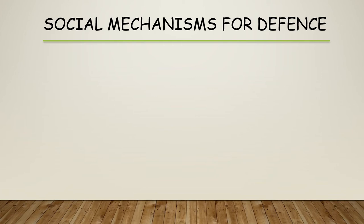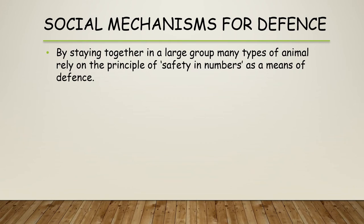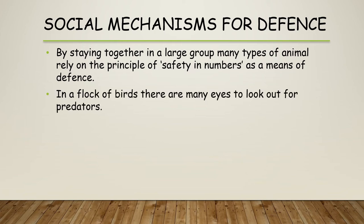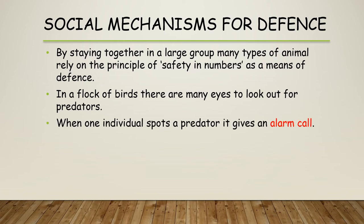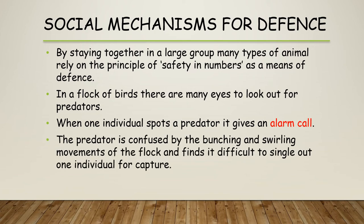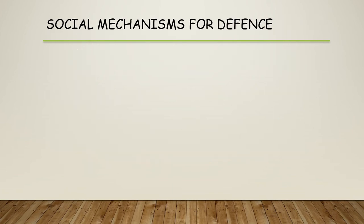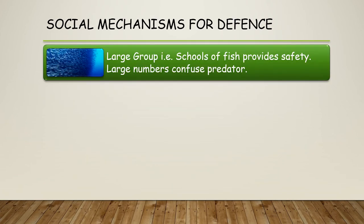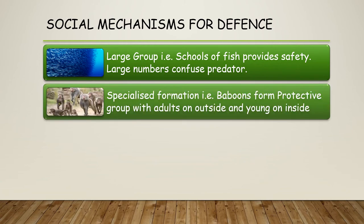Now looking at social mechanisms for defence, animals rely on the idea of safety in numbers, which we're familiar with as humans too. In a flock of birds there are many eyes to look out for predators, and when one individual spots a predator it can give an alarm call. They also use confusion through bunching and swirling movements, making it difficult for a predator to pick out an individual. The same applies to schools of fish — large numbers and coordinated movements help confuse predators and lower the risk for each individual.